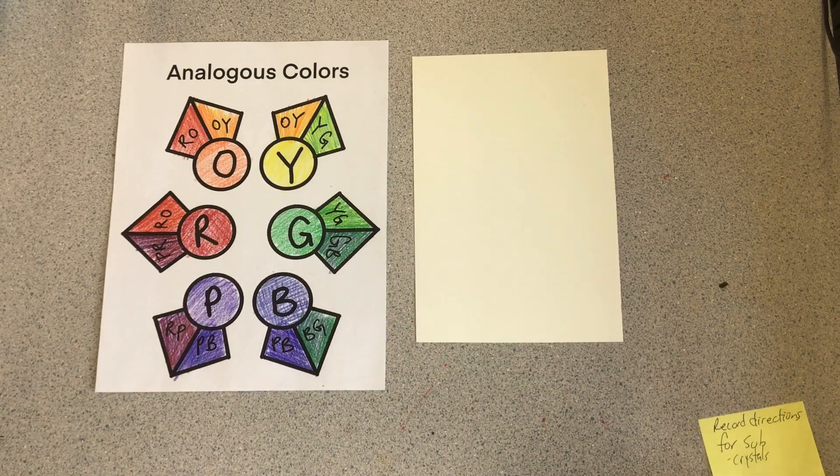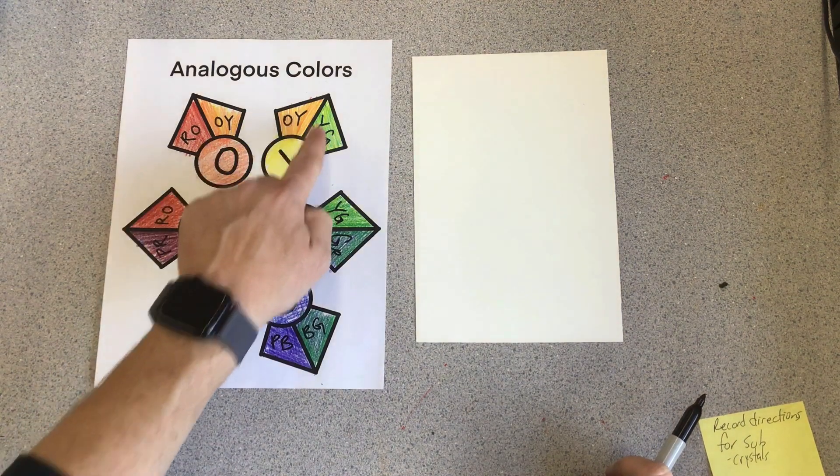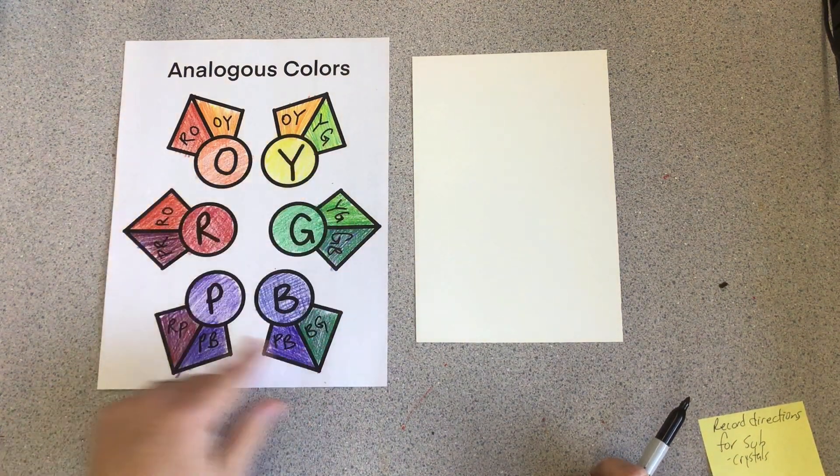So once you've finished your analogous colors worksheets - yellow, green, blue, purple, red, orange, and the colors next to it, orange, yellow, yellow, green, and so on - you're going to grab a smaller piece of paper and a sharpie.